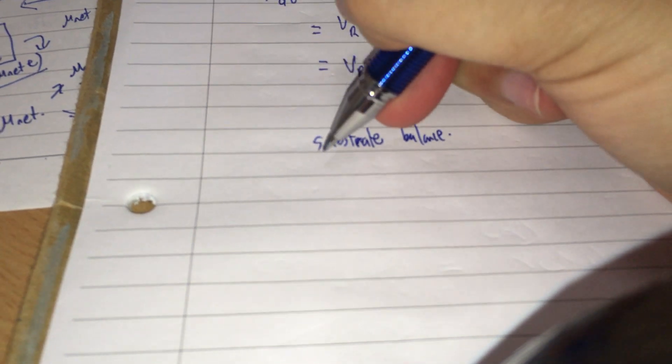We have accumulation equals in minus the outlet flow plus the reaction term. This is 0. This substrate going in, F S0. S0 is the initial substrate of feed substrate concentration. F is merely the flow rate. F S is the out term. Then you have some reaction term.